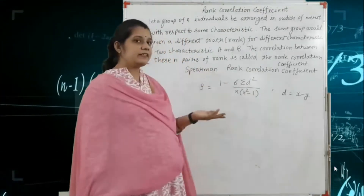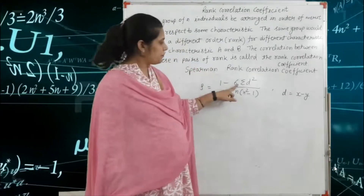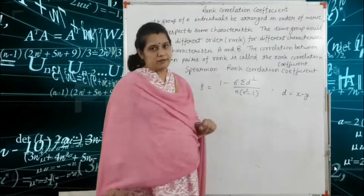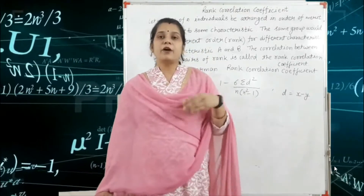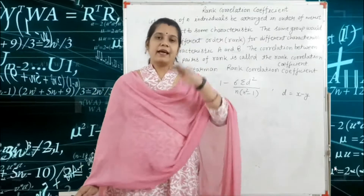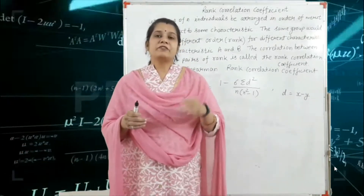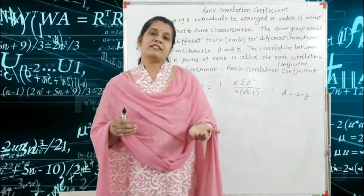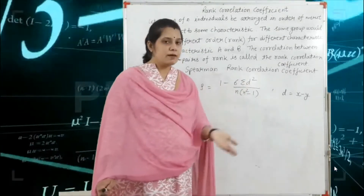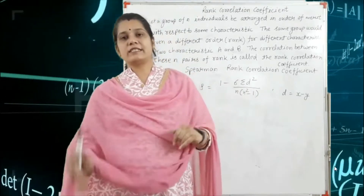So what is the formula? The formula is: rho = 1 minus 6 times summation of d² divided by n times (n² minus 1). Here n is the number of terms. For example, if we have 10 students in class A and 10 students in class B, then n is equal to 10.